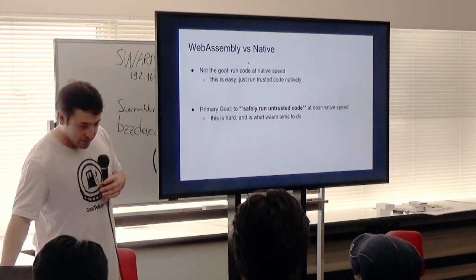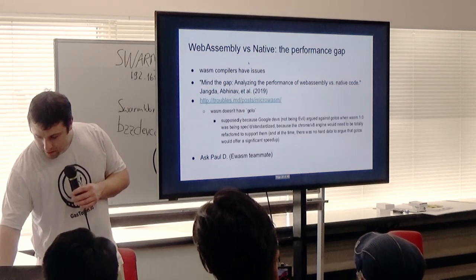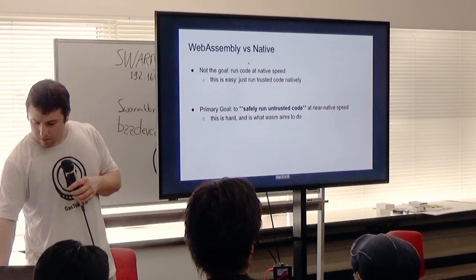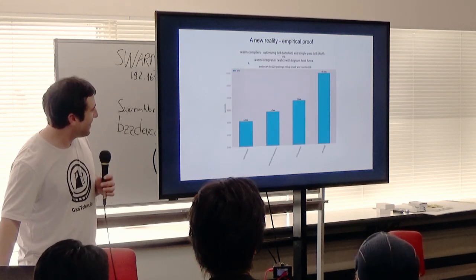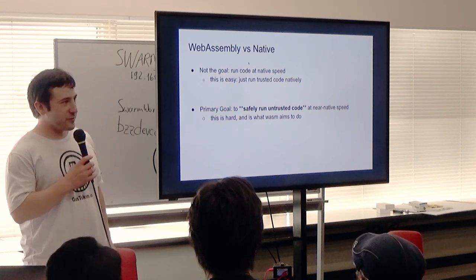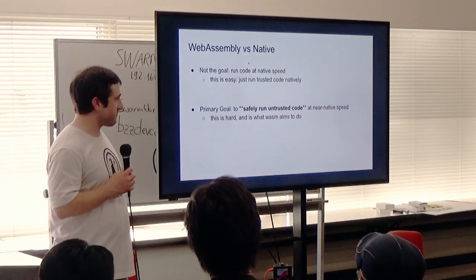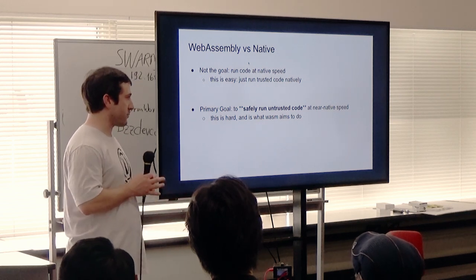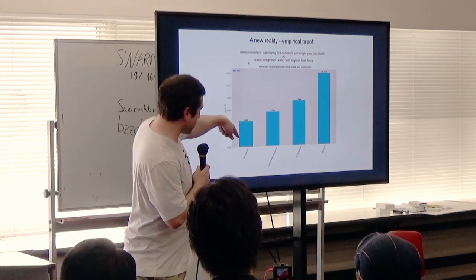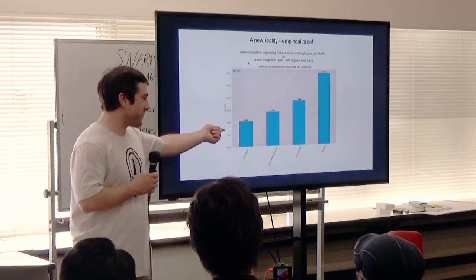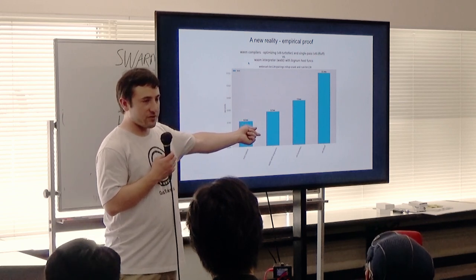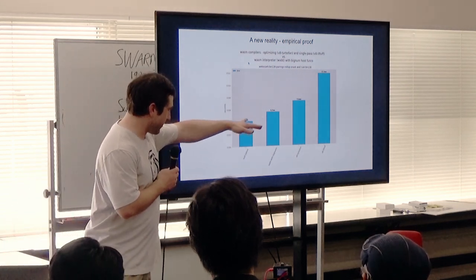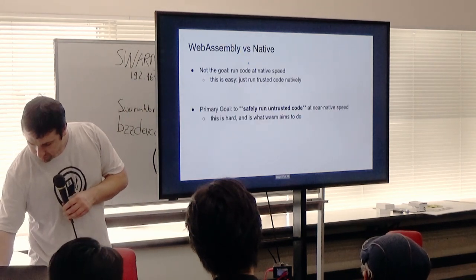The goal of WASM isn't to simply run code at native speed — it's to safely run untrusted code at near-native speed. That's a much harder problem. When we compare WASM to native, with native you're running trusted code, but with WASM you're running untrusted code. Native is a nice ideal to strive for, but they're fundamentally different.